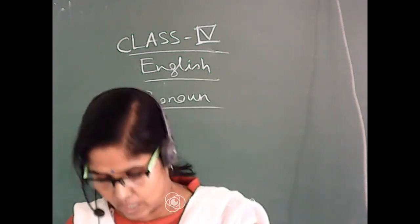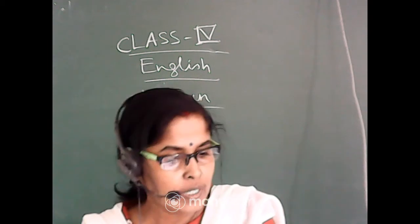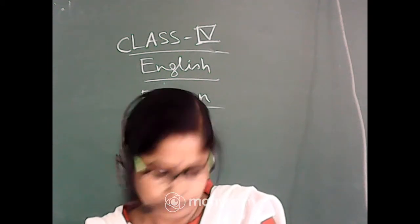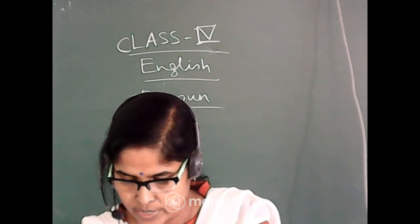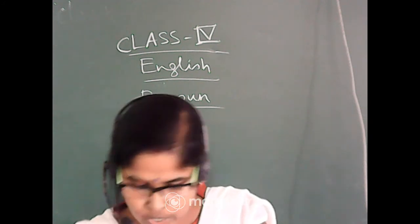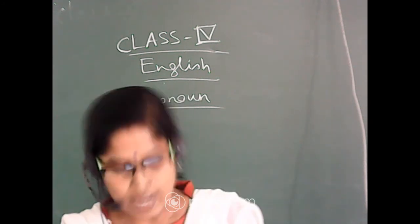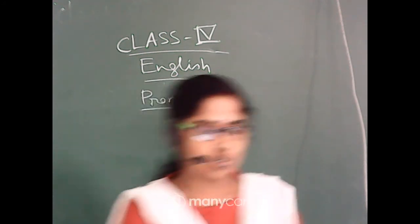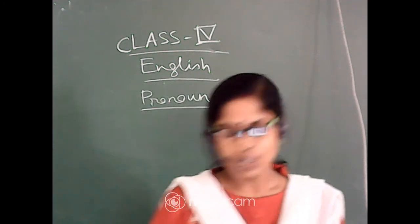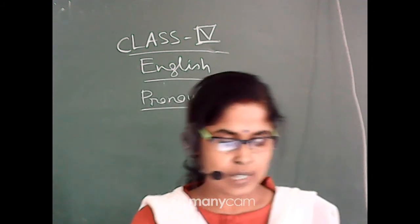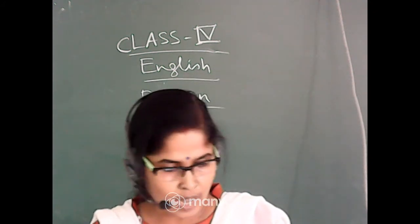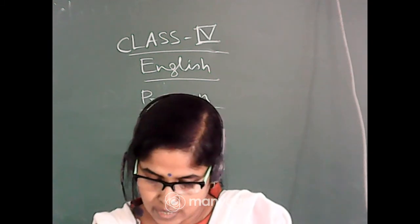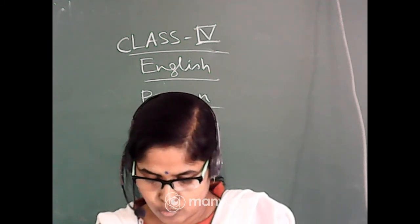Now come to question number C. The instruction is: underline the pronouns in the following sentences and circle the nouns which they stand for. Students, I am giving the answers. We will circle the nouns and we will underline the pronouns.